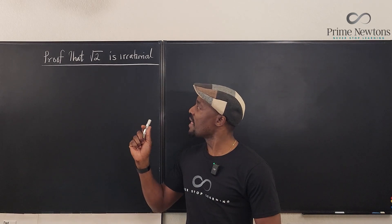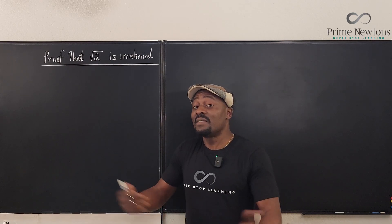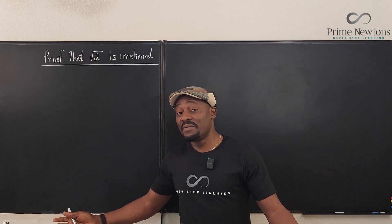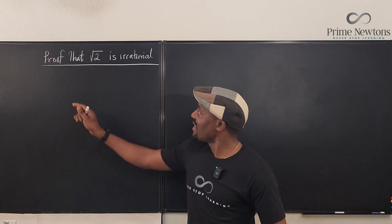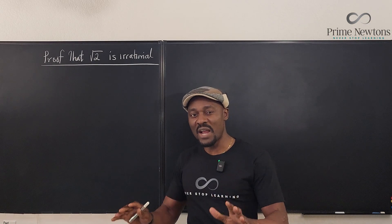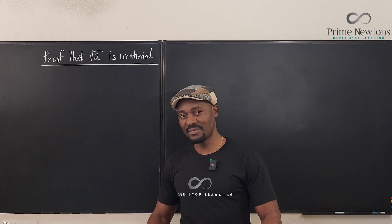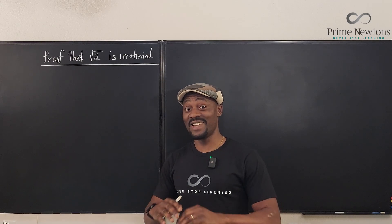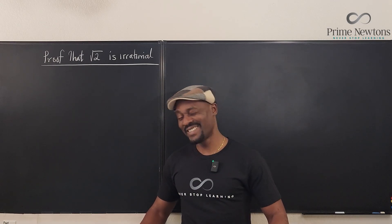And I want to show you that there is another proof that you can find somewhere. It's out there that the square root of 2 is irrational just using the rational root theorem. It is very easy to understand. Let's get into it.